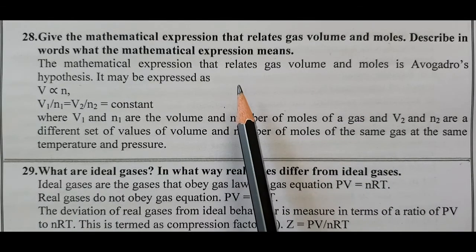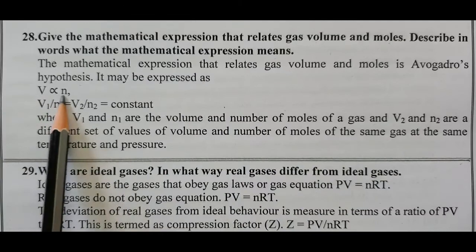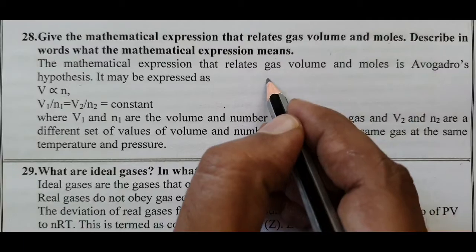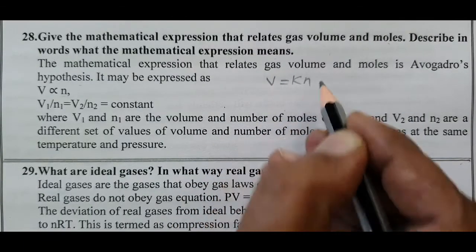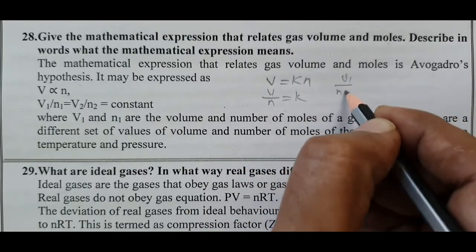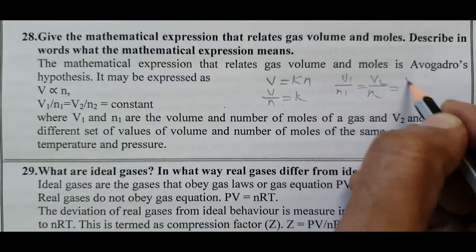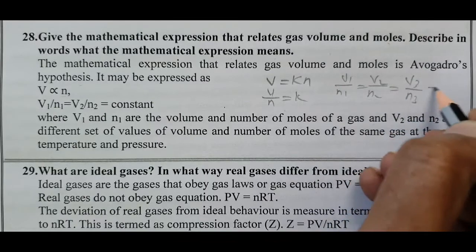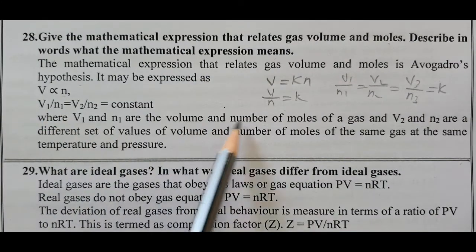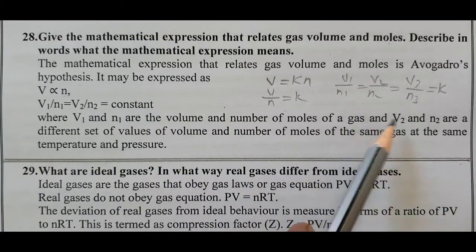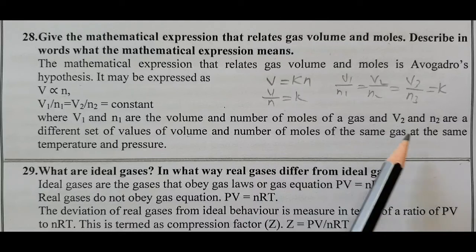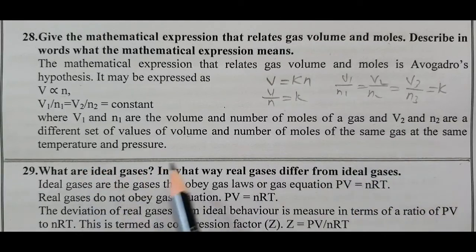Question number 28 — Avogadro's Hypothesis: Equal volumes of all gases under the same temperature and pressure contain equal number of molecules. Volume is directly proportional to N, or V = K × N, or V/N = K constant. Therefore V1/N1 = V2/N2 = V3/N3 = constant K, where V1 and N1 are the volumes and number of moles of the gas, and V2 and N2 are a different set of values of volume and number of moles of the same gas at the same temperature and pressure.